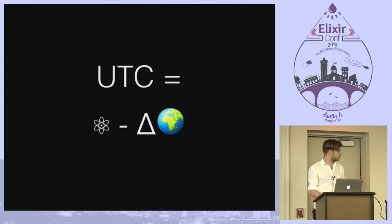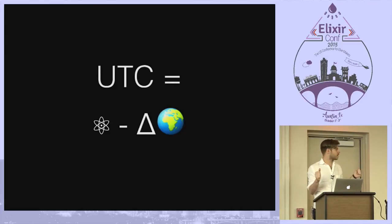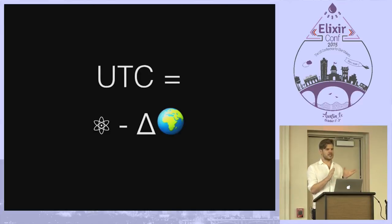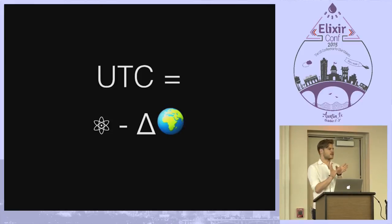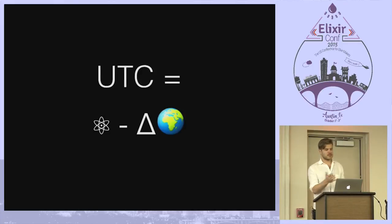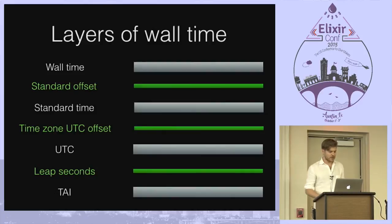UTC is basically TAI minus leap seconds. You have atoms which are constant, then you have differences in space, and you use that to correct things. With this, UTC is within one second of UT1. So GMT and UTC are always going to be within a second of each other. In all practical terms you could treat them as the same, as many people do — but this is the conceptual explanation of the differences.